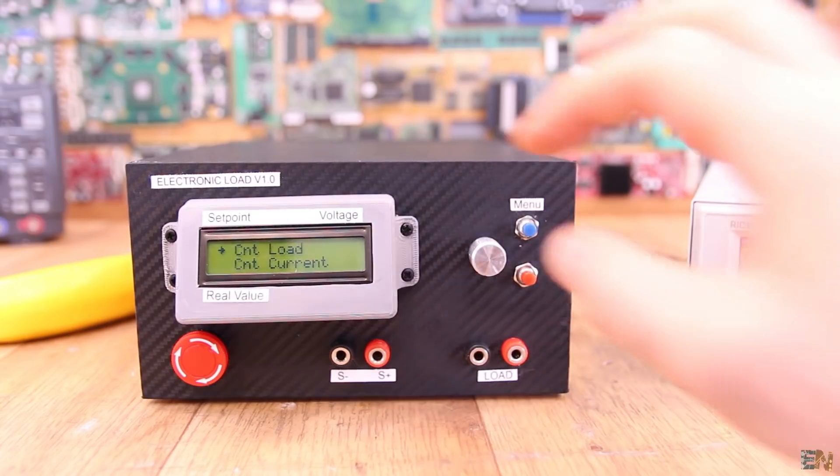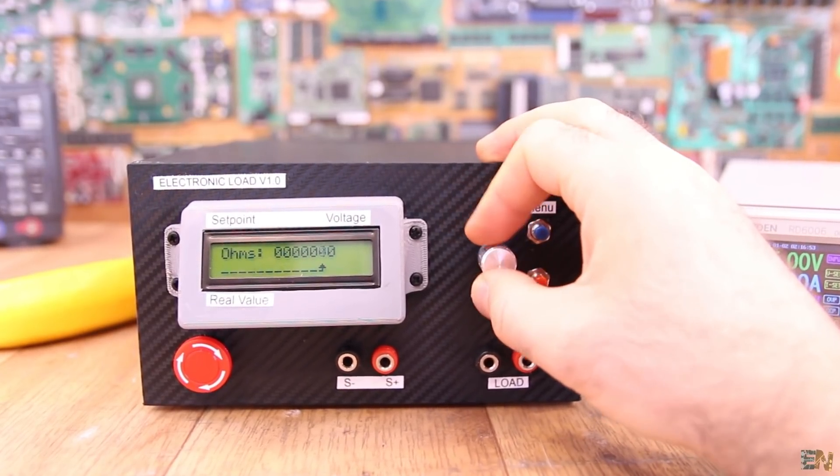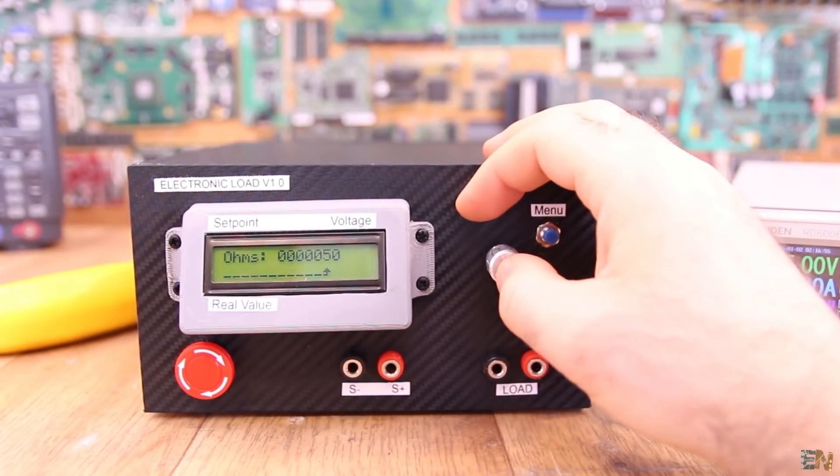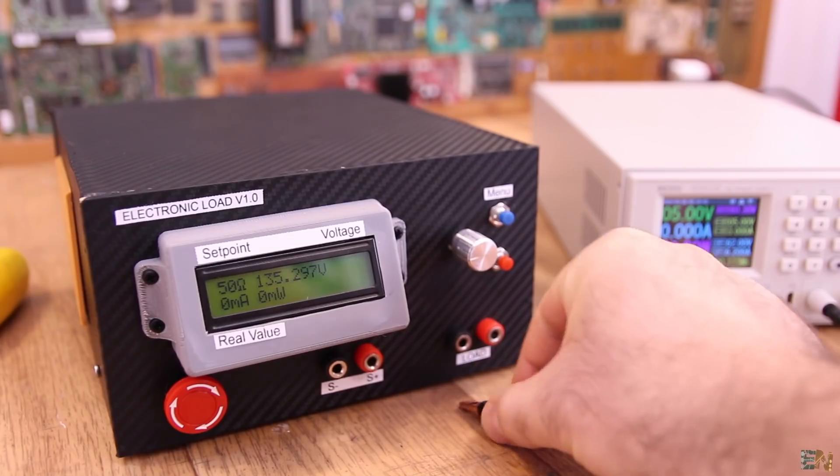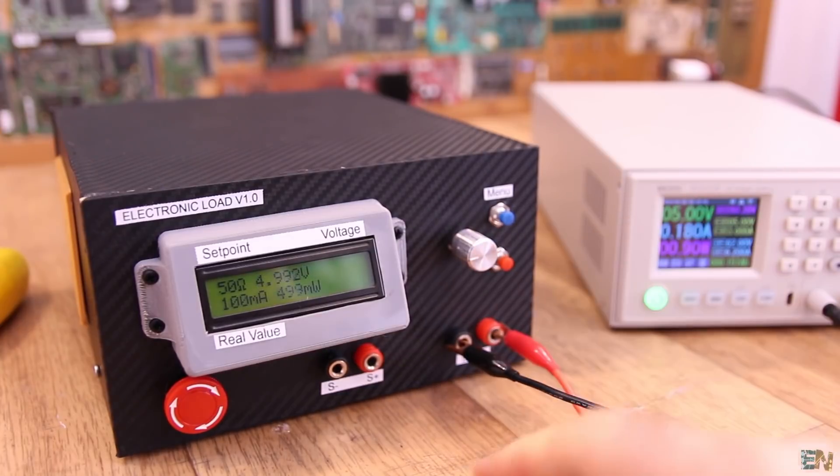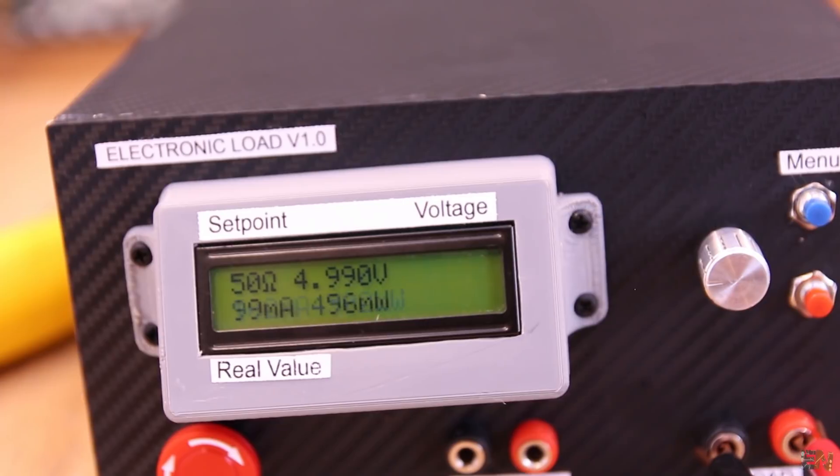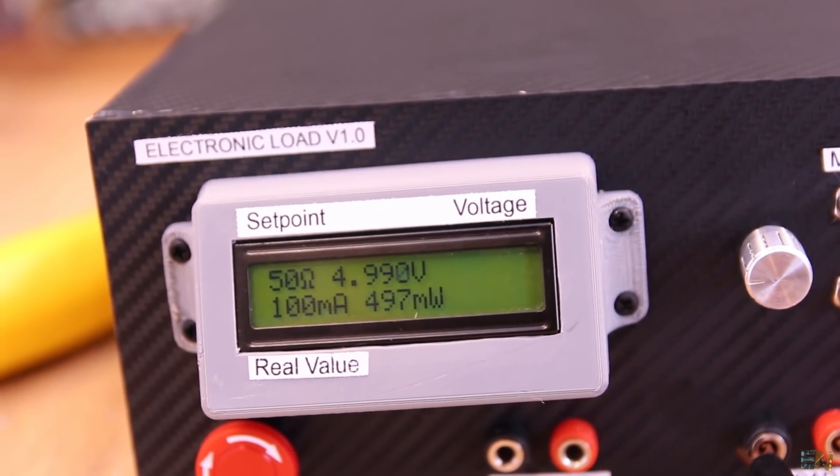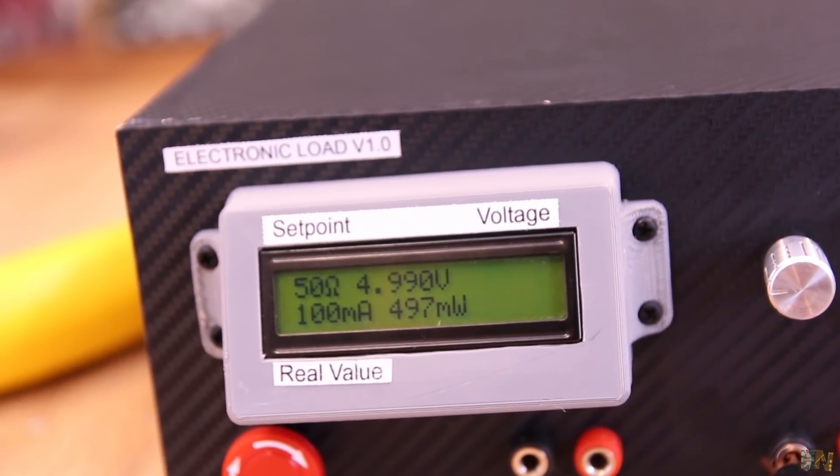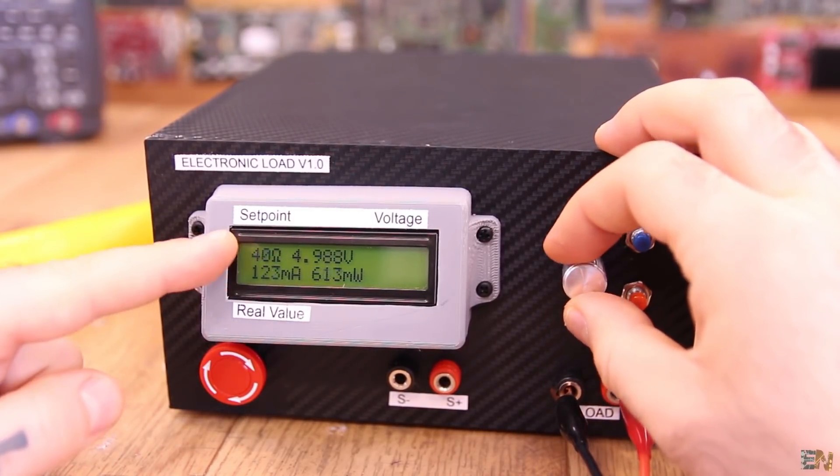So first we get into constant load mode. Using the encoder, we select the desired load in ohms. For example, I set it to 50 ohms. Now I apply 5V from my power supply and there should be a current flow of 100mA. On the LCD screen, we have the set point for the load, the current value, the voltage and the power. When the mode is running, you can still use the rotary encoder if you want to change the set point value.